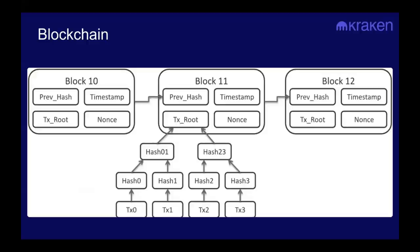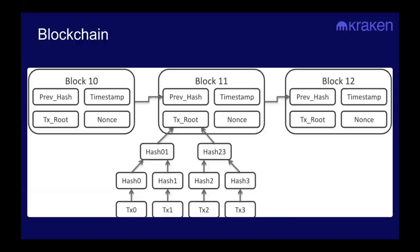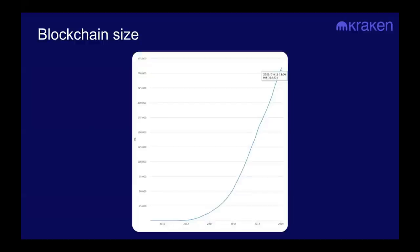Your node software has a long list of rules called consensus rules — for example, how many Bitcoin get created is a consensus rule you're also verifying. With each block adding about a megabyte of data, when you're spinning up a node you have to download all of this data to verify Bitcoin's entire history from day zero and make sure no new Bitcoin were created in an unexpected manner — no unexpected inflation in the system. This is a significant cost, particularly challenging in parts of the world with slow internet or data caps.